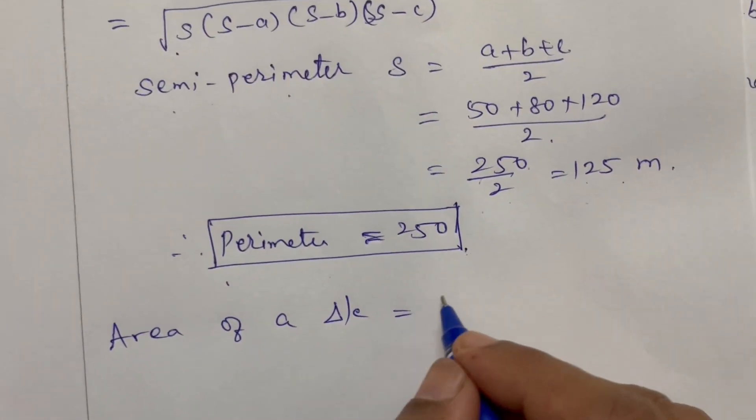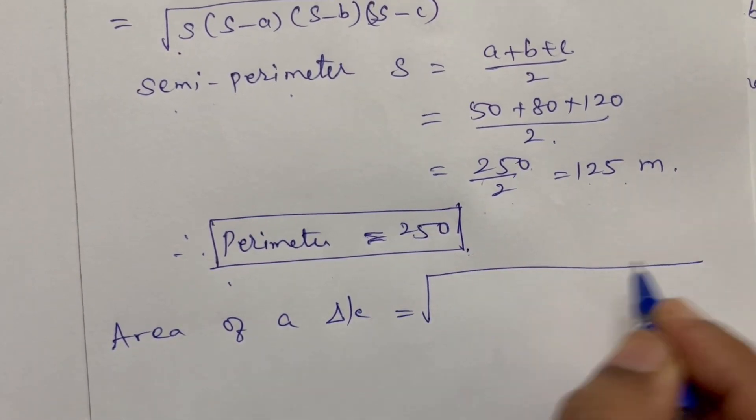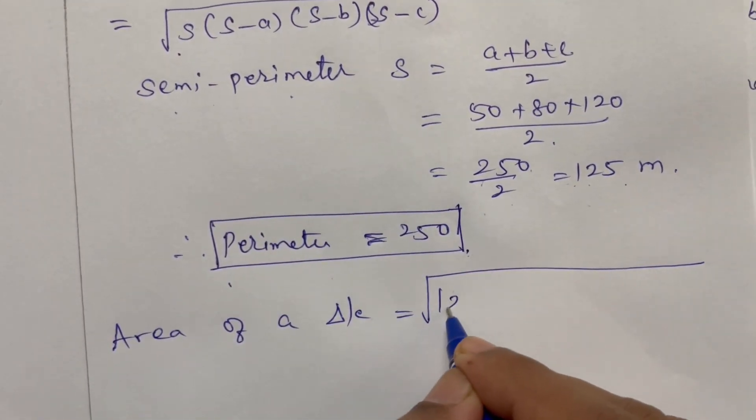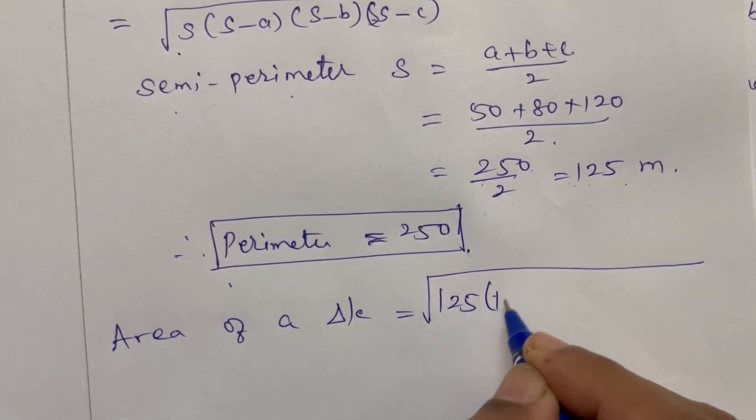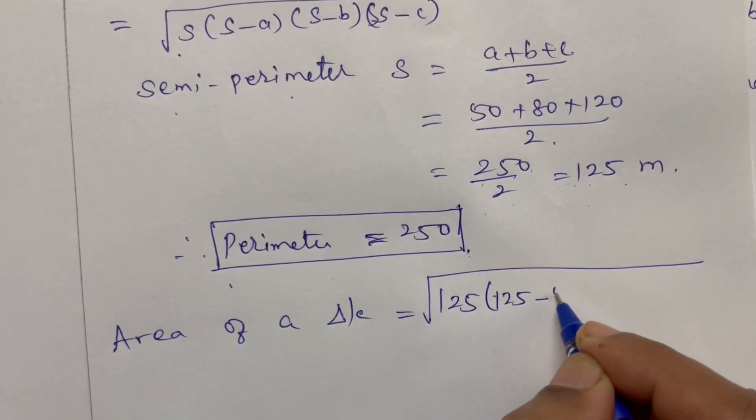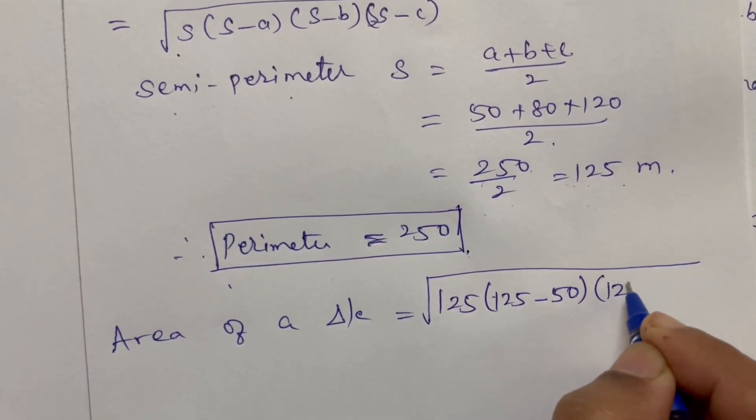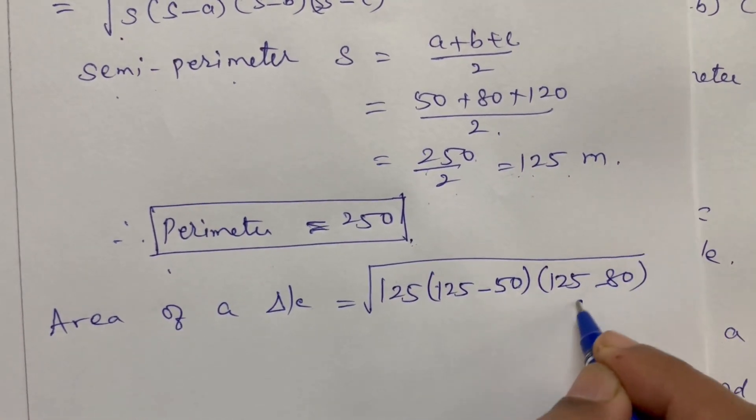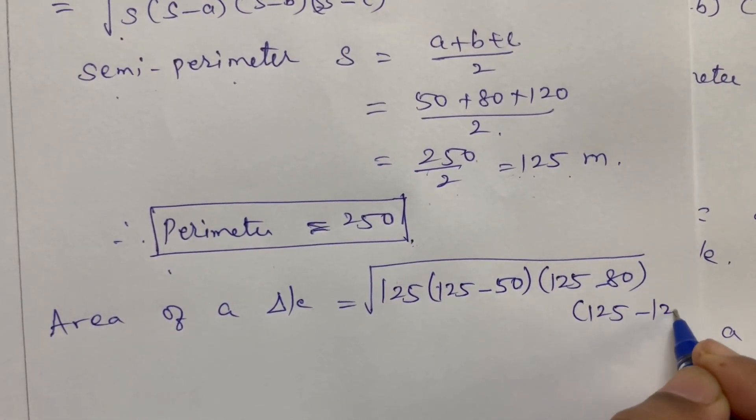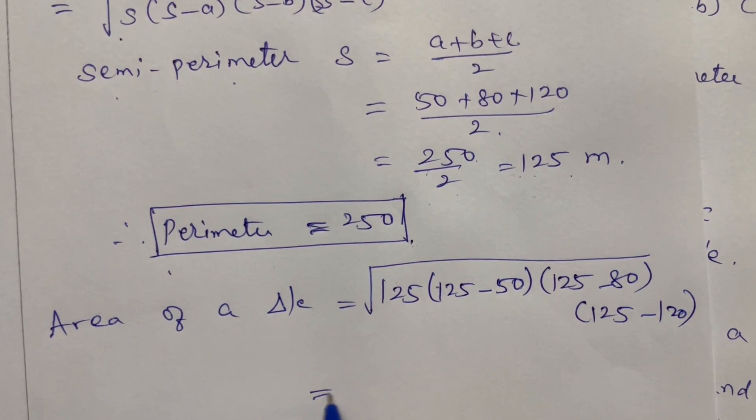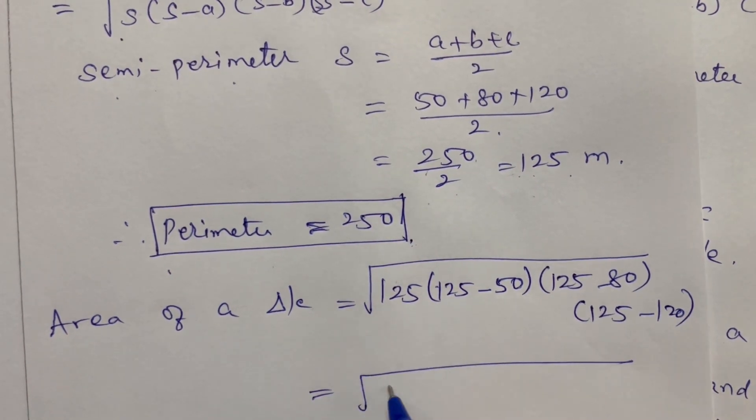Area is equal to square root of S(S minus A)(S minus B)(S minus C). Equal to square root of 125 times 75 times 45 times 5.